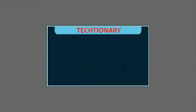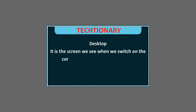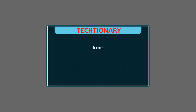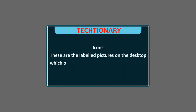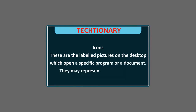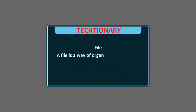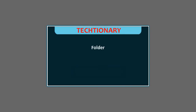Glossary: Desktop — it is the screen we see when we switch on the computer, with labeled icons on it. Icons — these are the labeled pictures on the desktop which open a specific program or document; they may represent a file or a folder. File — a file is a way of organizing information on a storage device. Folder — a folder is a location where we can store our files.